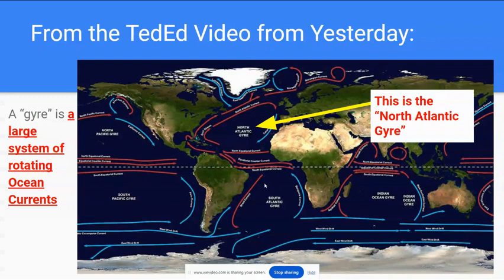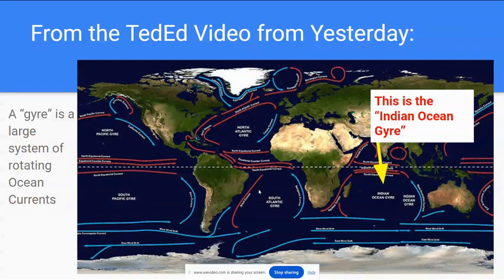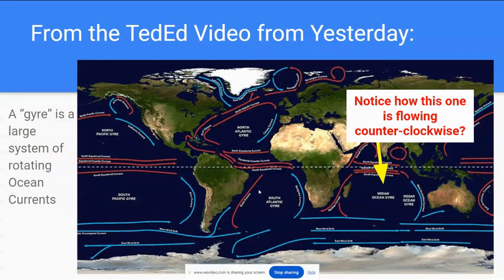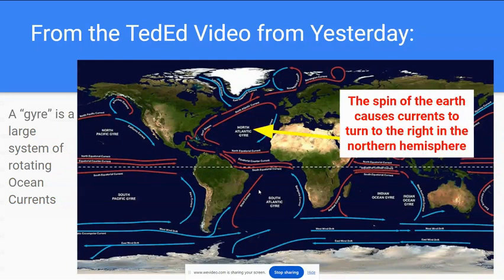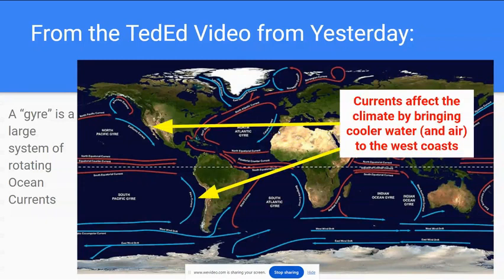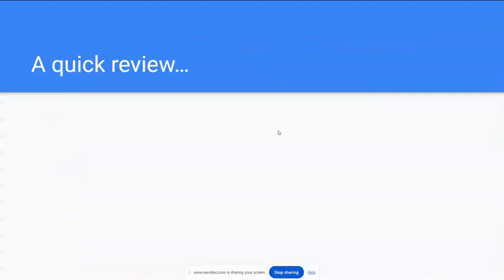In the Southern Hemisphere, the same thing applies — currents go the other direction, but still warm water is brought to the east coast of continents and cold water to the west coast. These are all called gyres. In the Northern Hemisphere they flow clockwise, and in the Indian Ocean the gyre moves counterclockwise. The spin of the Earth causes currents to turn to the right in the Northern Hemisphere and to the left in the Southern Hemisphere — this is called the Coriolis effect. Currents affect climate by bringing cooler water and air to the west coast of continents and warmer water and air to the east coast.